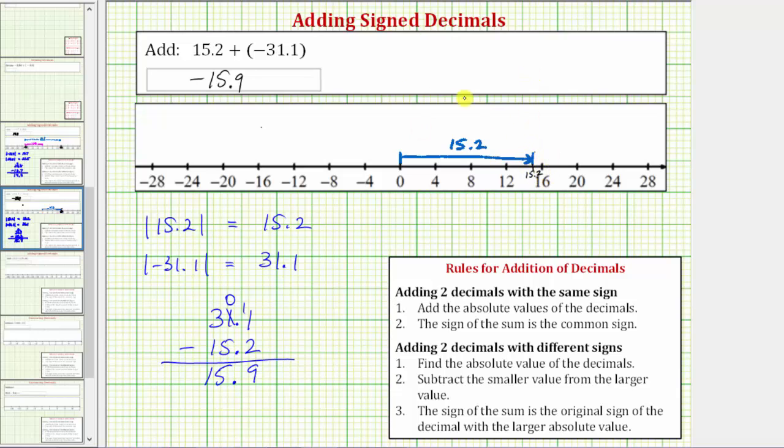And then from here, because we're adding negative 31.1, we need to go left 31.1 units, which takes us to negative 15.9, just to the right of negative 16. 15.2 plus negative 31.1 equals negative 15.9.